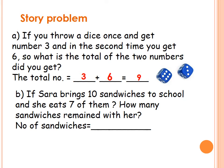The next story problem: if Sarah brings 10 sandwiches to school and she eats 7 of them, how many sandwiches remained with her? When we see 'remained', we're gonna use the subtraction — minus sign. So, we put the first one 10, the biggest, minus 7. 10 sandwiches minus the 7 sandwiches that she eats. Equals — after 7: 8, 9, 10. How many fingers to reach 10? 3. So, the remaining sandwiches is 3.